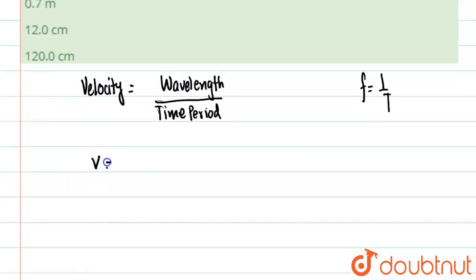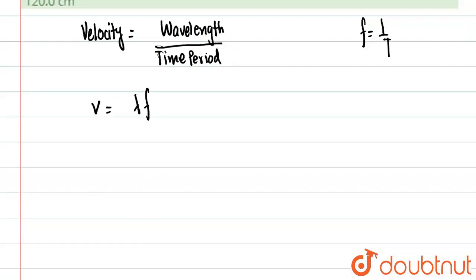So what we're going to get - the formula of velocity will be equal to wavelength, which is lambda, into frequency. Now we need the wavelength, so we'll keep wavelength on one side and everything else on the other.